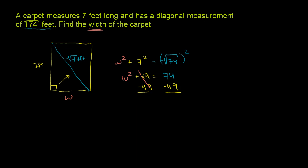The left side, these guys are going to cancel out. We're just going to be left with W squared is equal to, what's 74 minus 49? 74 minus 49, well, we could do a little bit of regrouping or borrowing here if we don't want to do it in our head.